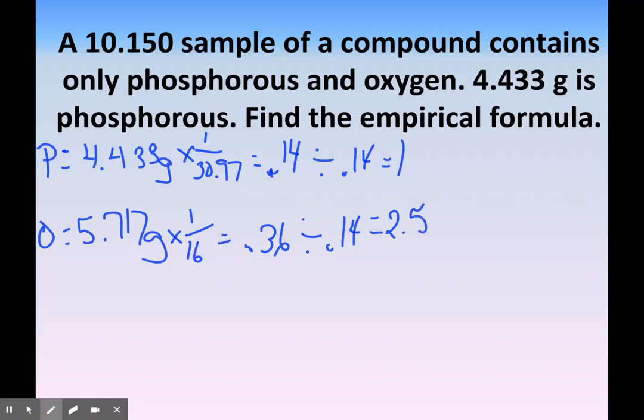That's not a nice whole number. So if you get to this point where you have a 0.5, you're going to multiply everything by 2 to get whole numbers. So this will be 2 and this will be 5. My answer would be P2O5.